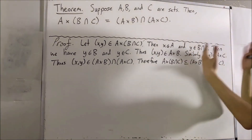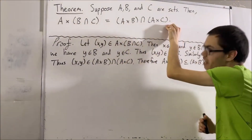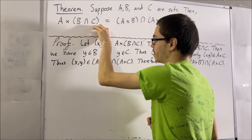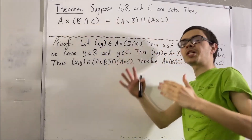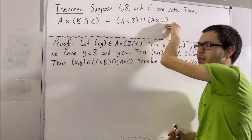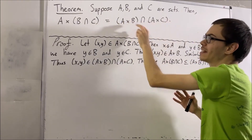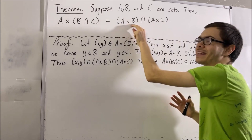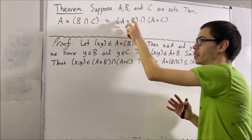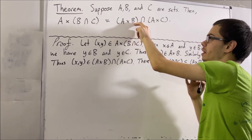And so, we have shown that everything in this set is also in this set. Now, we want to show that everything in this set is also in this set. So again, let's consider an arbitrary element of this set. Now notice, everything in this set is also in this set, and this set is a Cartesian product of two sets. So every element of this set is an ordered pair.